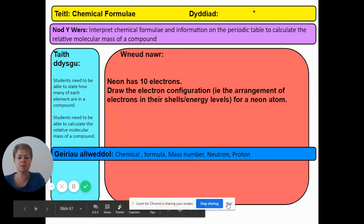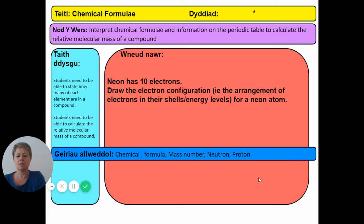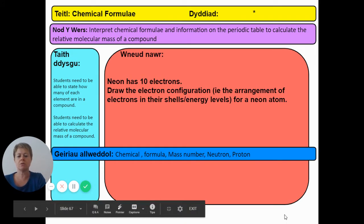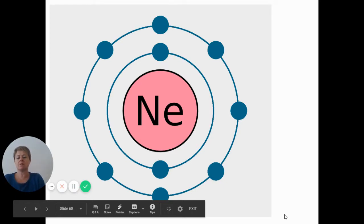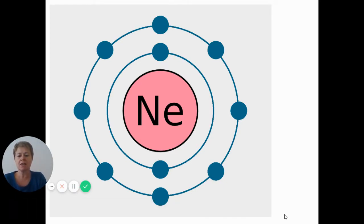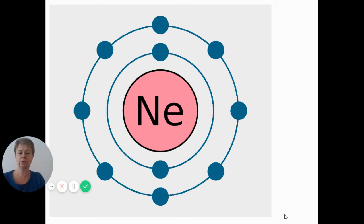I'm going to show you the answer to the do-now task. You should have drawn something like this: neon has ten electrons. The rules are two electrons in the first shell and up to eight in the second shell. So with ten altogether, we put two in the first shell and eight in the second shell, and we don't need to start another shell.